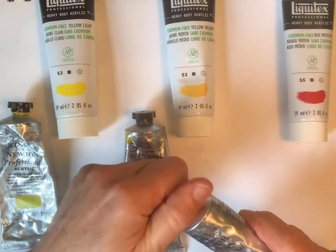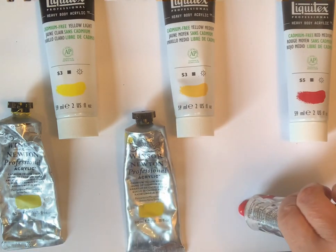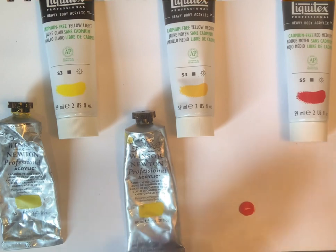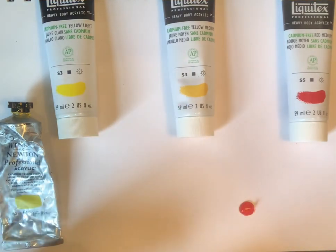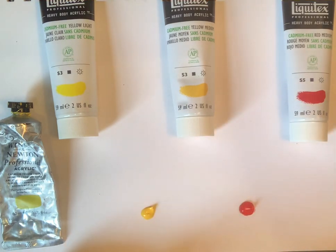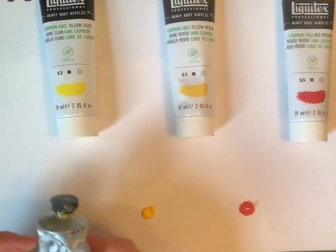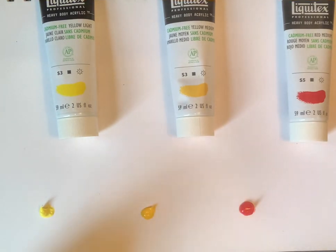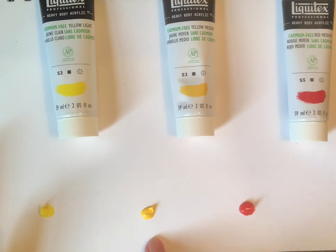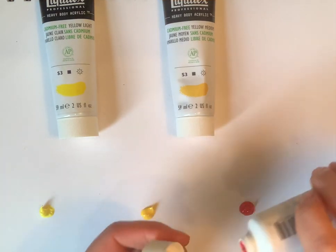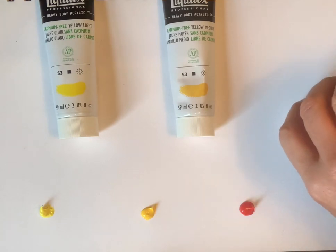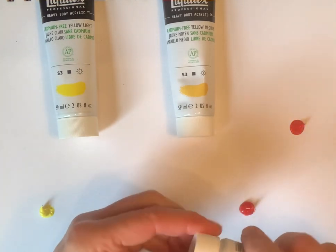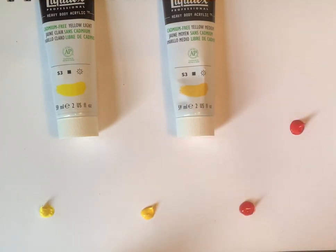So here is the cadmium red medium that we usually use. I'm just going to put a little dab of them right here on to the page. The cadmium yellow medium and cadmium yellow light. These are the ones we use in our basic palette.